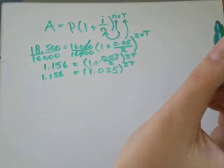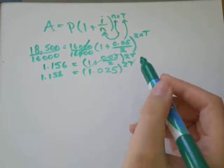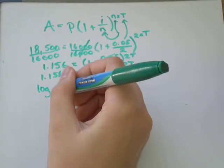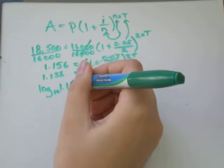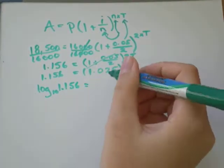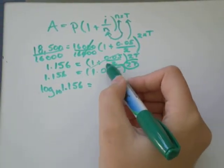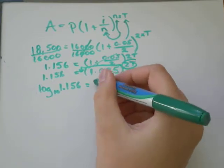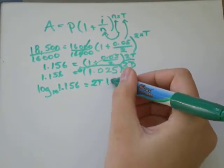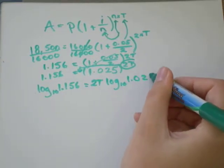Now I need to start dealing with this exponent. So to do that, I'll take the log of both sides. Always take log base 10 because that's the one that you can do on your calculator. And I'll get the power rule of logs. It says that this exponent is going to come in front. So I'll get 2t times the log, always use base 10, of 1.025.